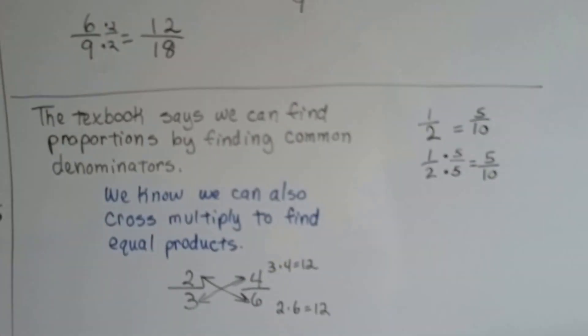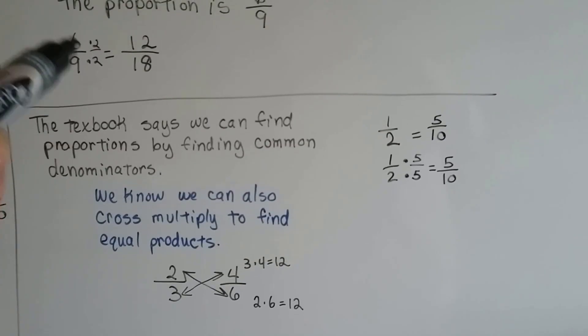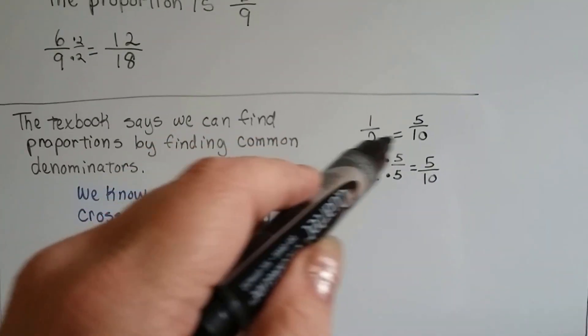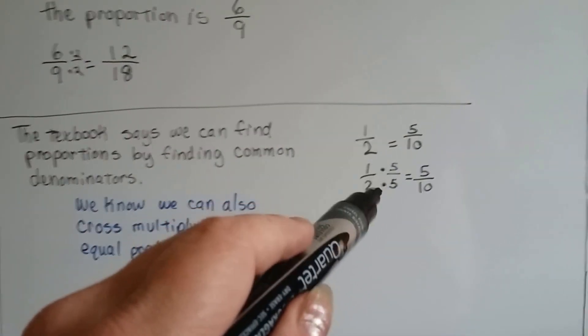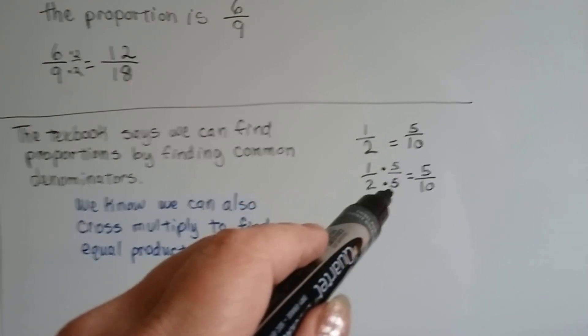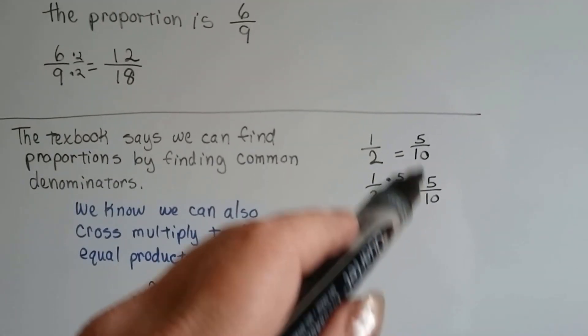So our textbook says that we can find proportions by finding common denominators like this one up here. One-half is equal to five-tenths because we can multiply them by a form of one, five over five, and it'll become five-tenths, see?